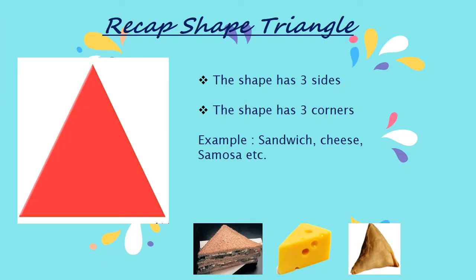Now we will look at our next shape — shape triangle. This is the picture of the triangle shape. A triangle has three sides and three corners: one, two, three sides and one, two, three corners. Examples can be a sandwich when cut in half diagonally, a cheese cube cut in triangle shape, and a very yummy samosa.